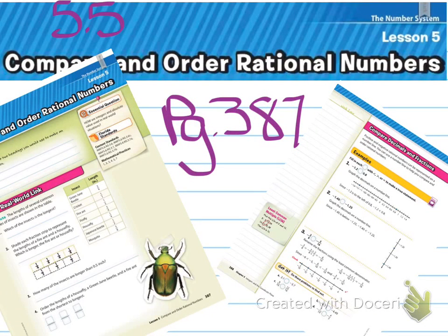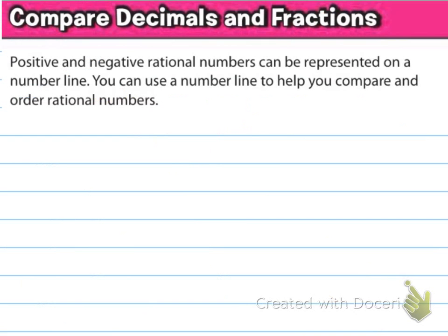Alright, so we're looking at 5.5, compare and order rational numbers, which starts on page 387. Compare decimals and fractions. Positive and negative rational numbers can be represented on a number line. You can use a number line to help you compare and order rational numbers. Now we're just talking about it with decimals and fractions included.